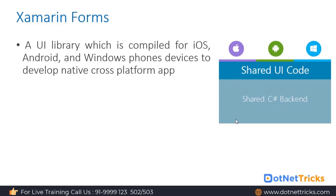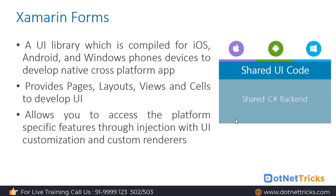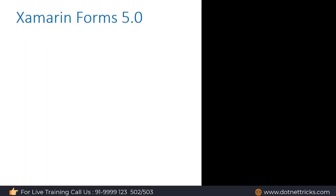Xamarin.Forms applications typically consist of a .NET Standard library and individual platform projects. The shared library contains XAML and C# for business logic and UI such as models and other code. The platform projects handle any platform-specific logic required by the application. Xamarin.Forms includes various pages, layouts, views, and cells needed to develop the UI, and also allows access to platform-specific UIs through injections and custom renderers.